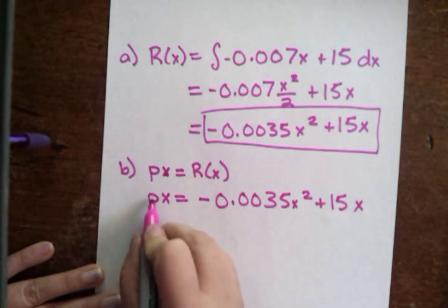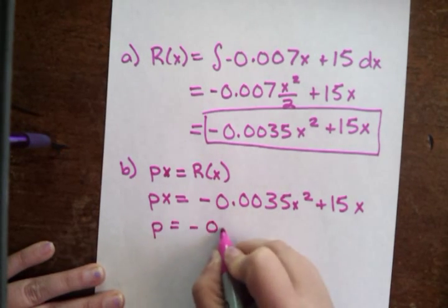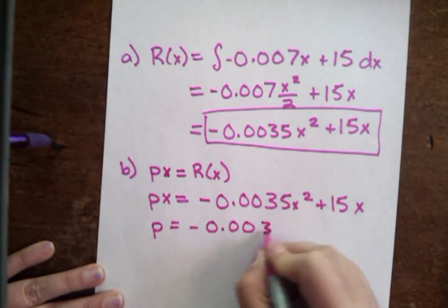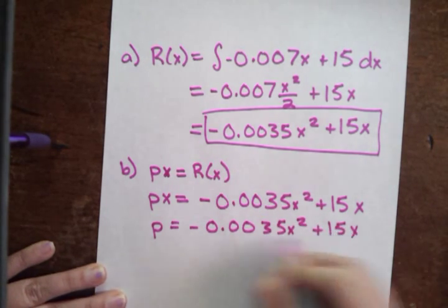And if we want to just solve it for p, well, let's divide the whole thing by x. So if we divide both sides by x, we get...